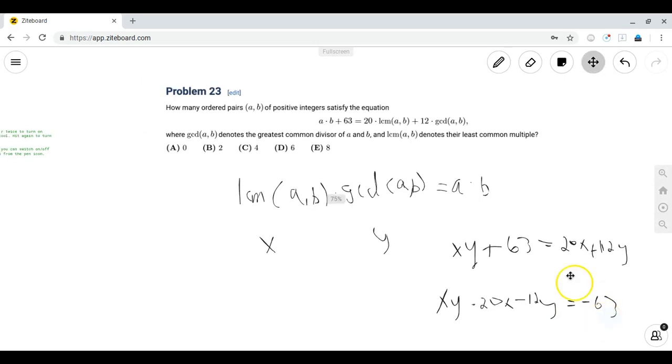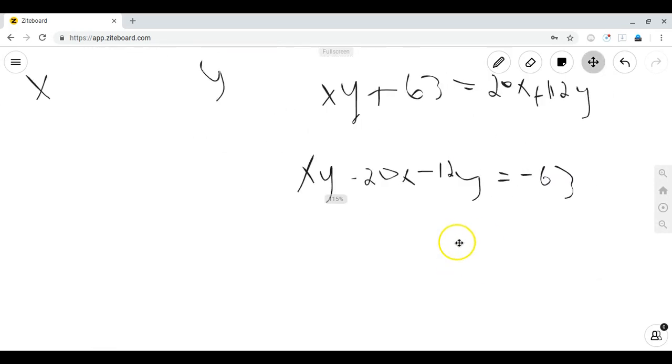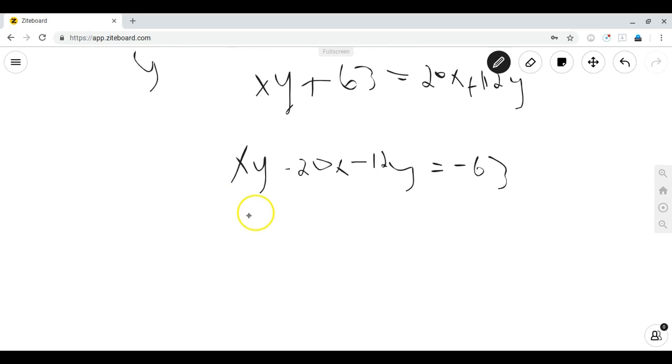Since the right hand side is simply a constant and the left hand side is a product of two numbers, and then subtracted by a number times the first number and another number times the second number, we attempt to factor this in the form of x minus i times y minus j for constants i and j.